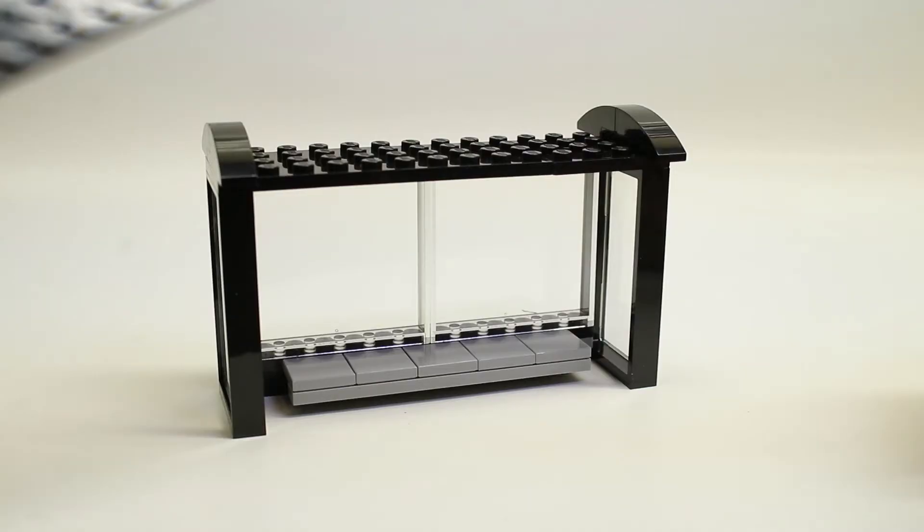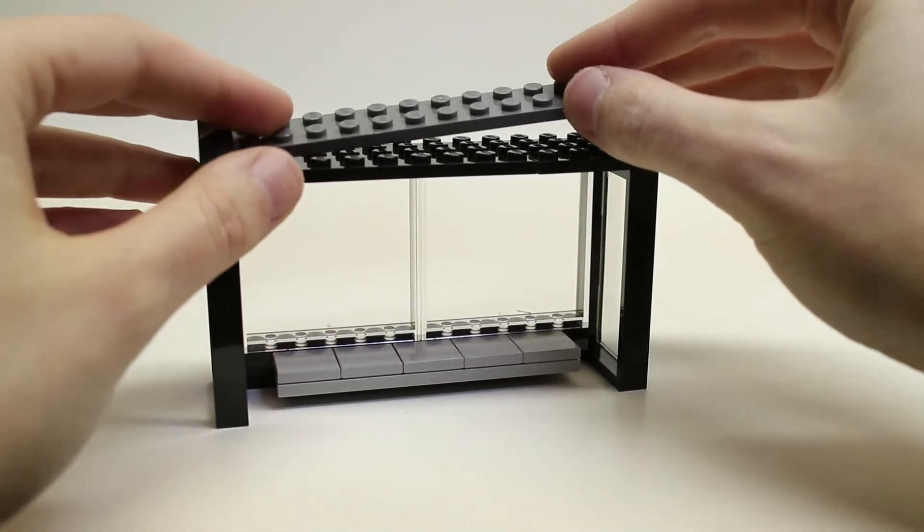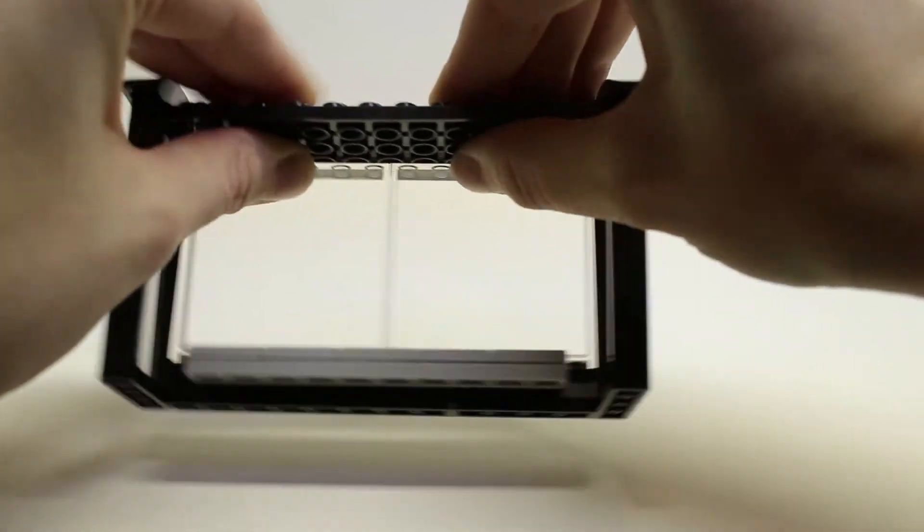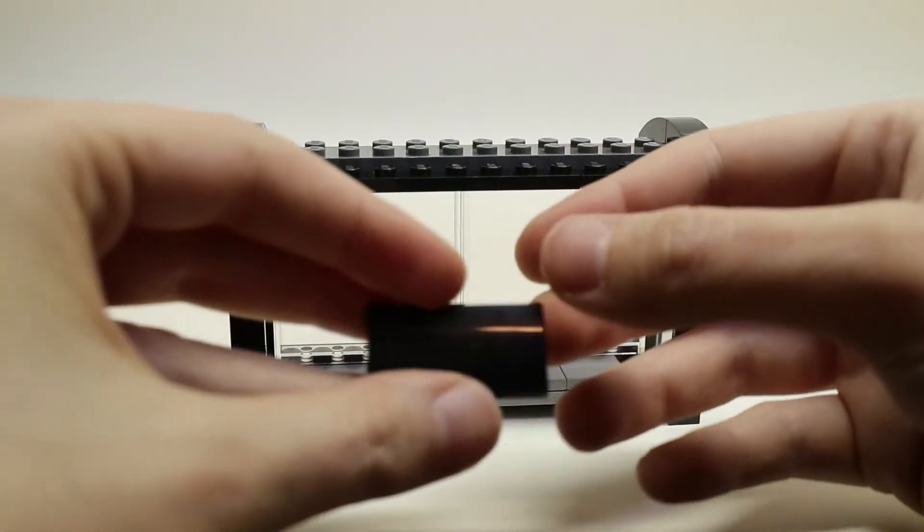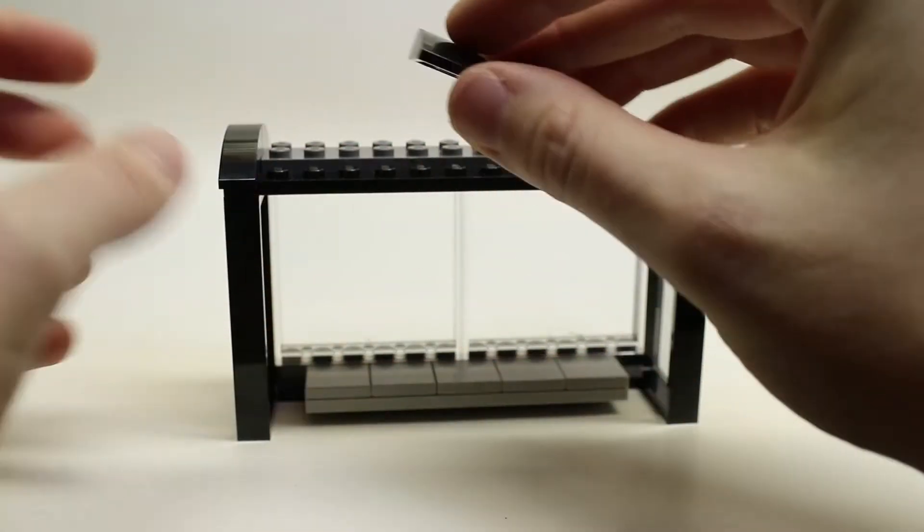Next you're going to want to take your 2 by 12 dark bluish gray plate and place it in the center of the roof. Next you'll take six of these sloped 2 by 4 pieces and place them at the edge of either side of the roof.